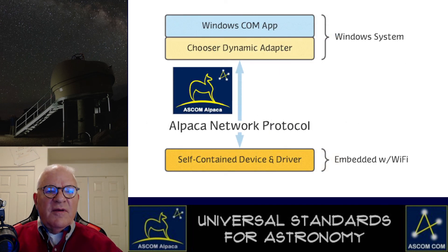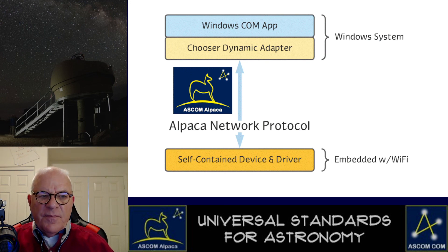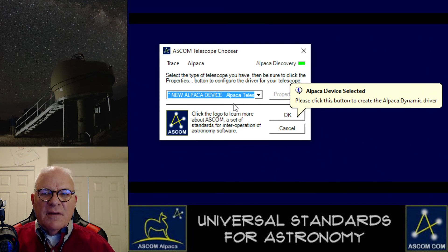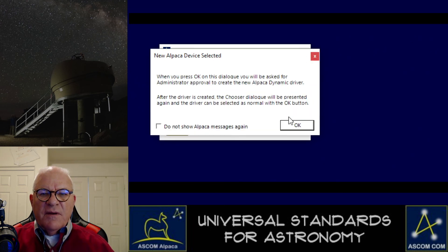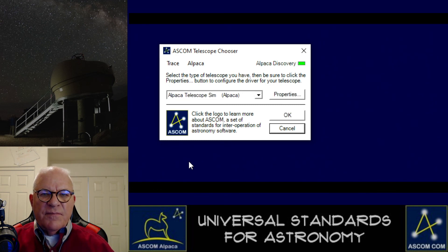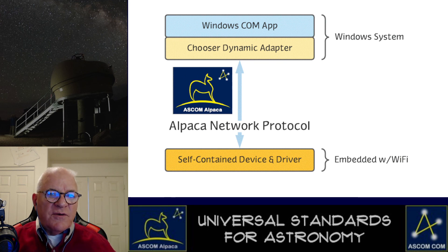With the introduction of Alpaca, we have the possibility of an unmodified Windows COM application being able to reach out to an Alpaca device by having these new chooser dynamic drivers. When the Windows app displays the chooser, it looks up for Alpaca devices anywhere on the net. If it finds one, you simply choose it and click OK to have it create the new driver for you — a COM driver that gives access to the Alpaca device. And there it is: Alpaca Telescope Simulator. At this point, an unmodified Windows app that speaks COM-flavored ASCOM can talk to an Alpaca device out on the network with no changes to the Windows app at all.